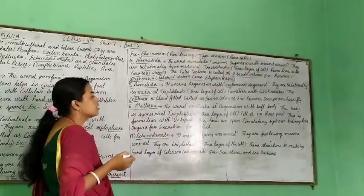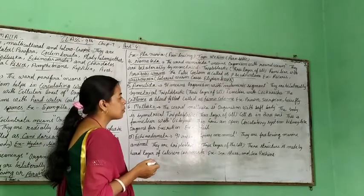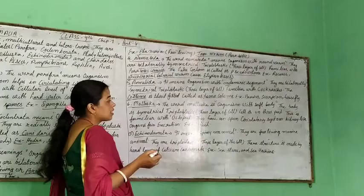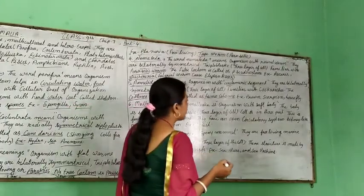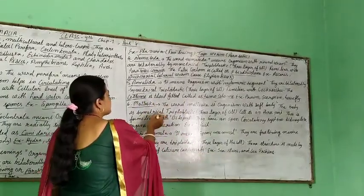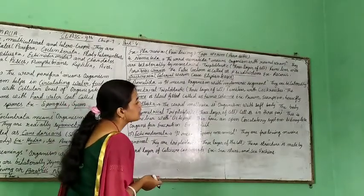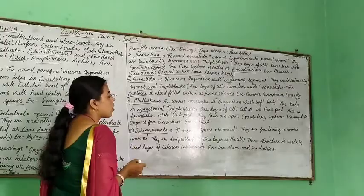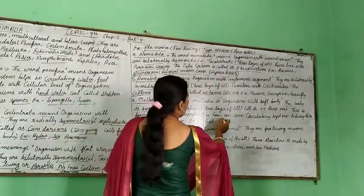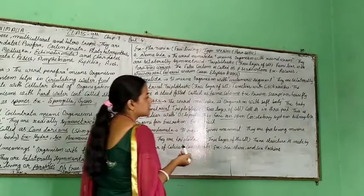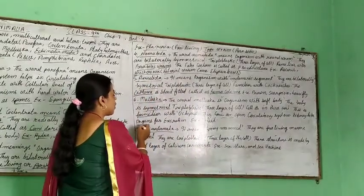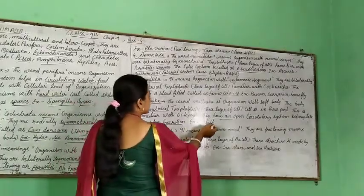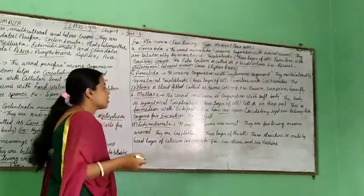Next is Mollusca. The word Mollusca means organisms with a soft body. The body is bilaterally symmetrical and triploblastic. They are familiar with octopus. They have an open circulatory system and kidney-like organs for excretion. Example: snail.